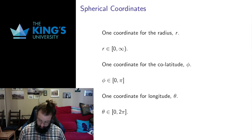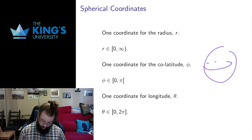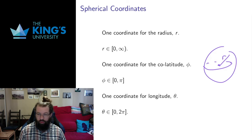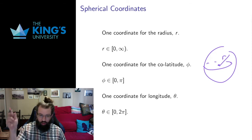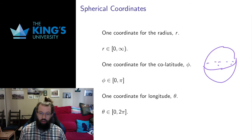The second thing I want to introduce are spherical coordinates, and unsurprisingly these are based on the sphere. To understand these, think of the globe, because the globe is one of the clearest examples of a sphere and we use similar terminology. If I have a globe, I have a radius which is the distance out from the origin. Unlike in cylindrical coordinates, this radius is the distance from any point to the origin, not to the z-axis. So I draw the line from that point to the origin and look at its length — that gives me the radius of the sphere I'm on.